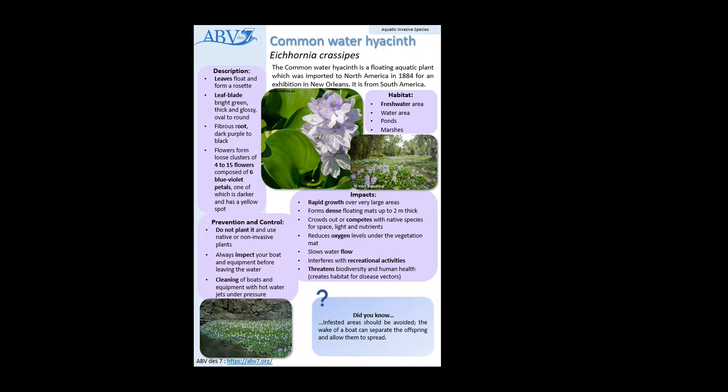The leaves float and form a rosette. The leaf blade is bright green, thick, and glossy, with an oval to round shape. It has a fibrous root that is dark purple to black in color.